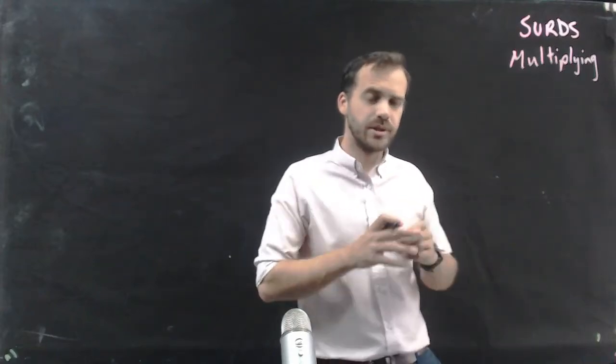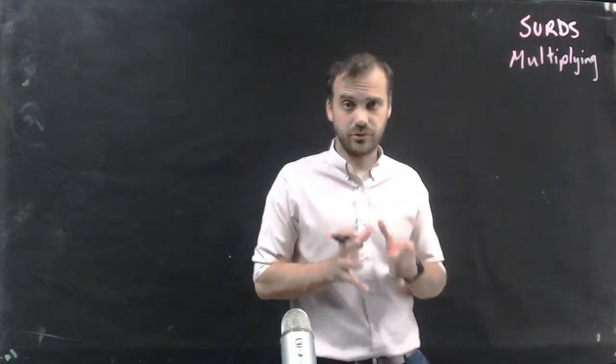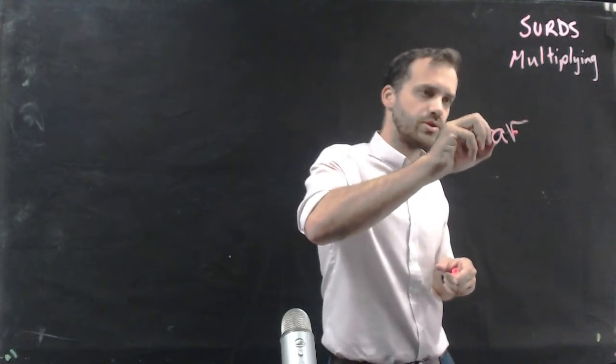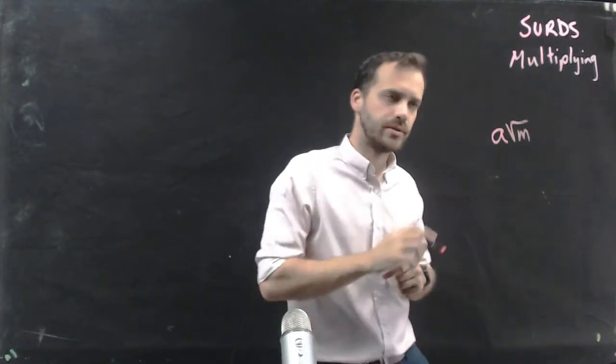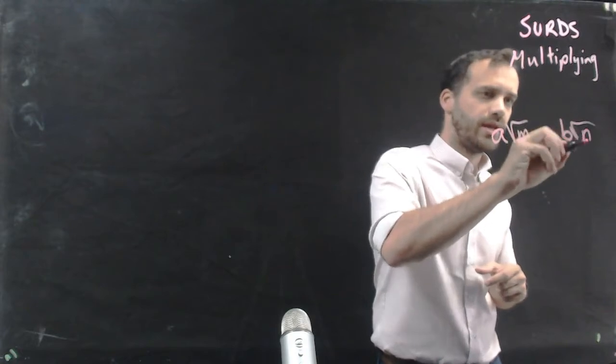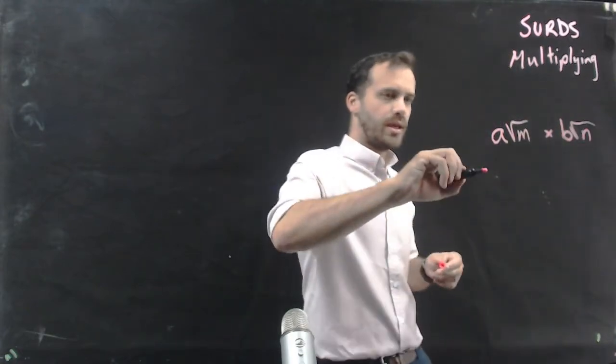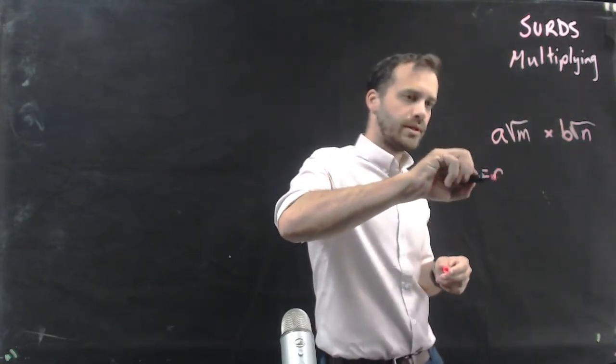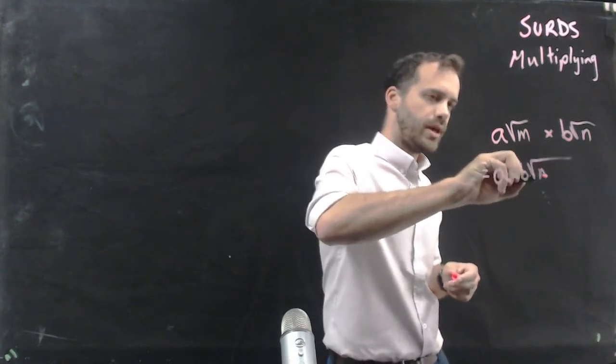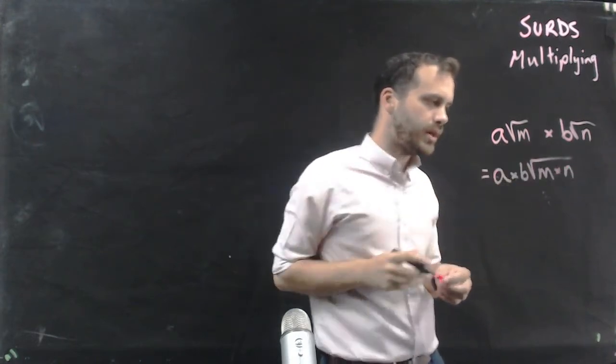This time I'm multiplying surds and I'm going to start with the basic general formula. That says a times the square root of m times b square root n equals a times b root m times n.